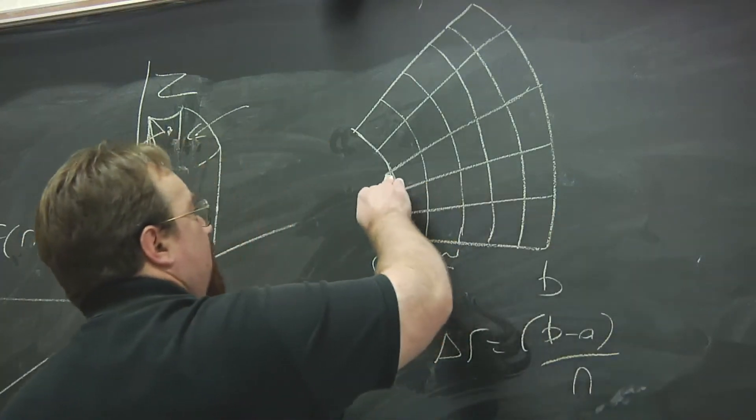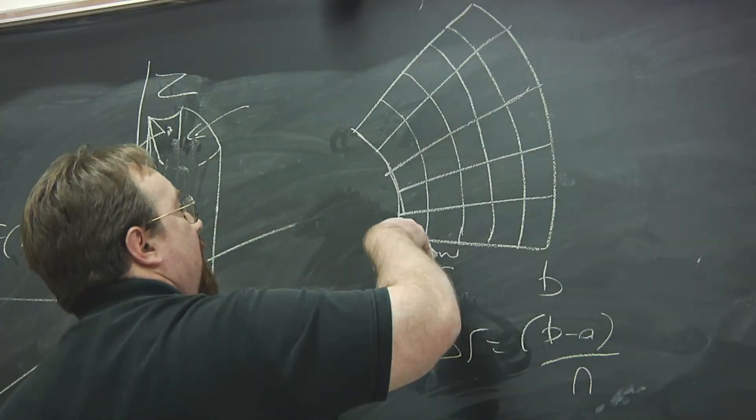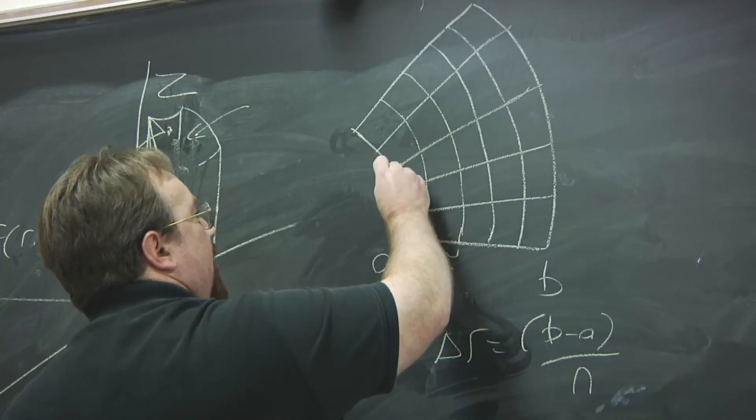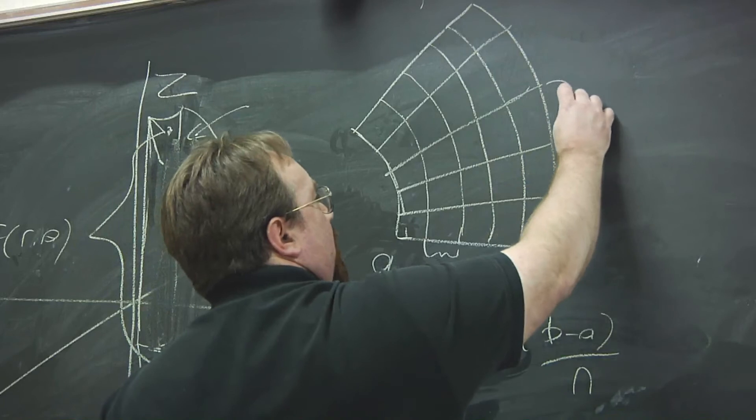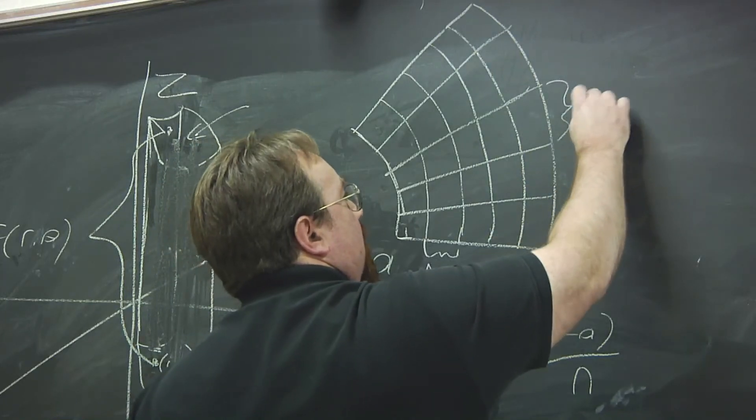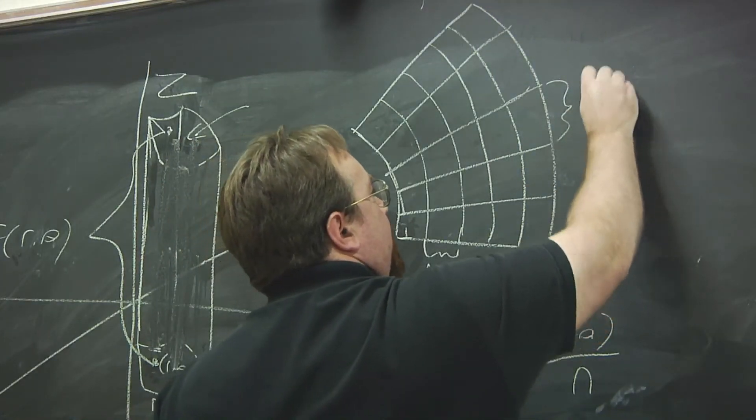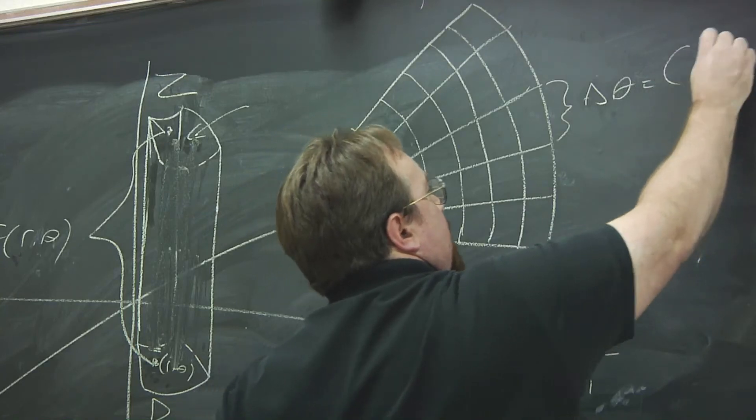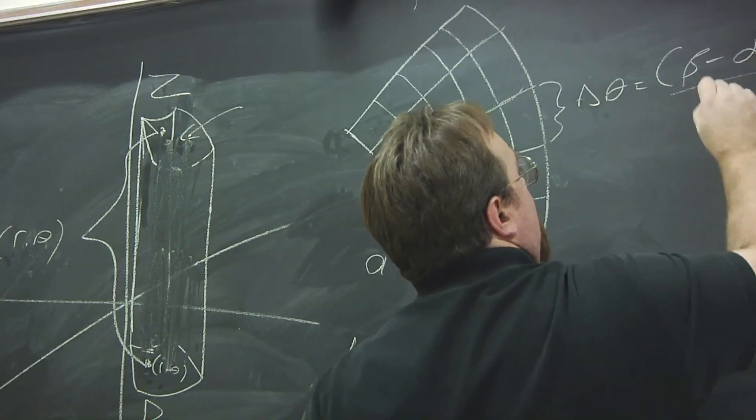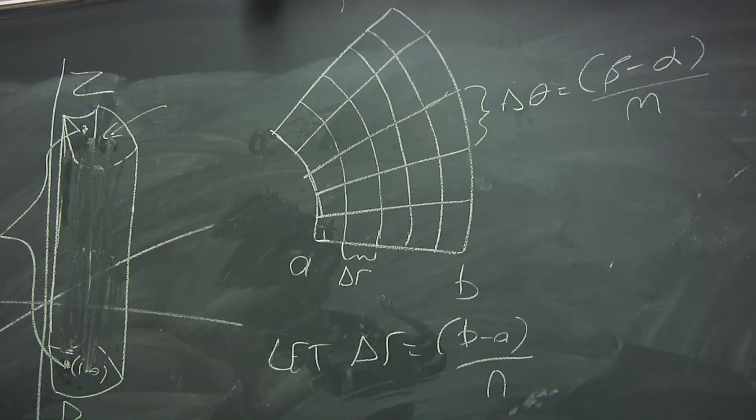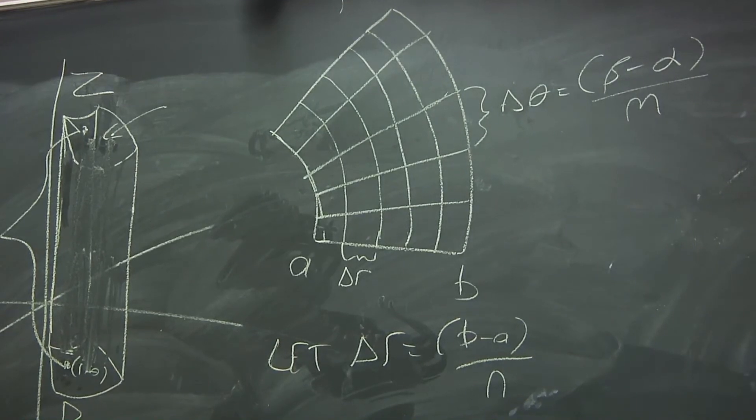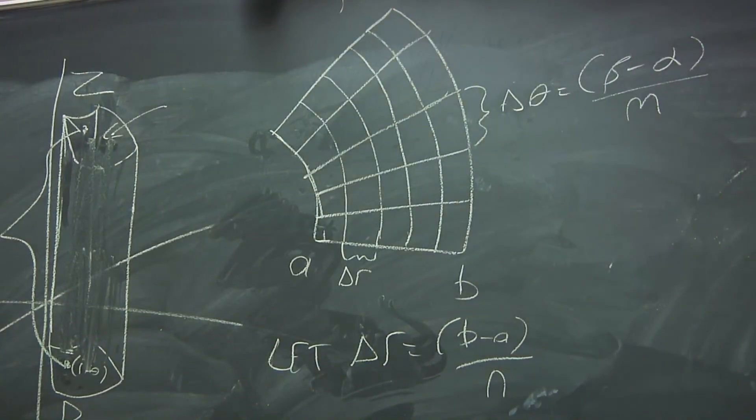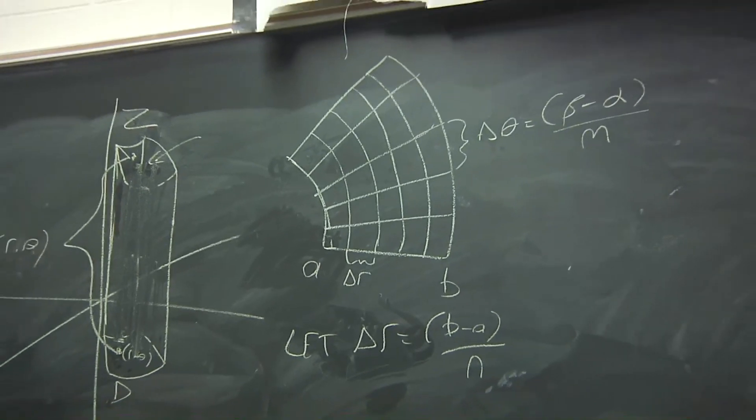And we do a similar subdivision in theta. So here we have, even though all of these widths are different, the angle is the same. So delta theta is beta minus alpha over m. So we're dividing the interval from a to b for r into n subintervals. We're dividing the interval theta from alpha to beta into m subintervals, where n and m are not necessarily the same.